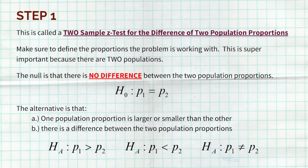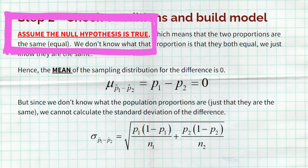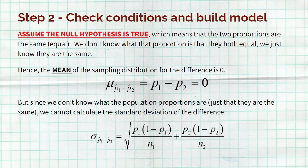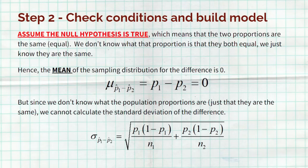Step two is checking those conditions and building the sampling distribution. You have to check the conditions for both samples. When we build our model, we have to assume the null hypothesis is true — that these two populations are no different. The proportion from population one equals the proportion from population two, which means the difference is zero. That's the mean of our sampling distribution: a big, fat, beautiful zero.